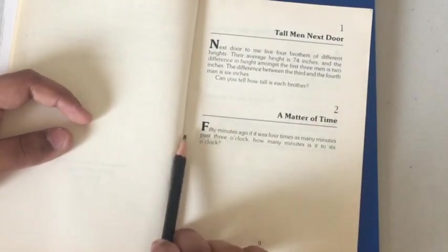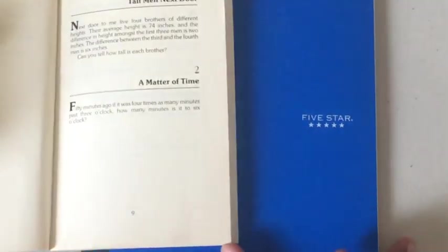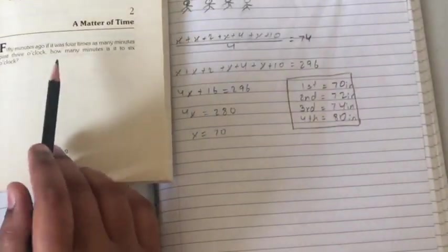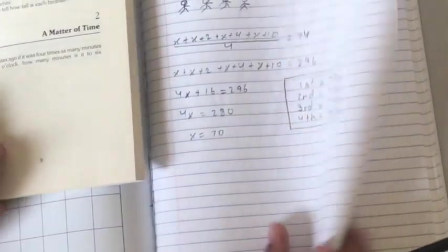Okay, so on this question the wording is a little bit confusing, but if you pay close attention, they say fifty minutes ago and four times as many minutes past three o'clock.